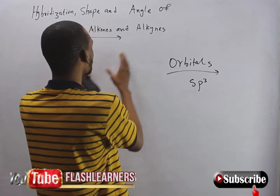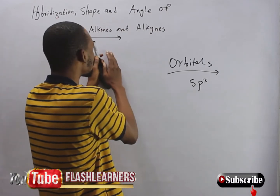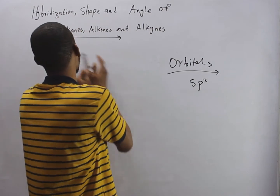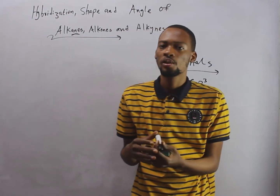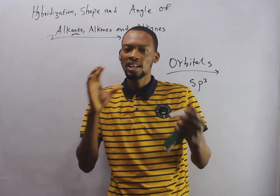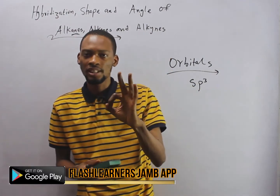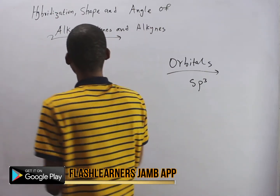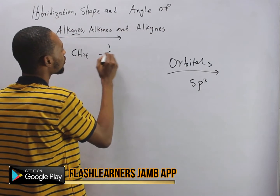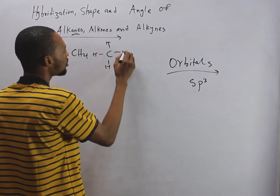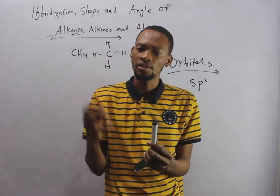We will be discussing hybridization, shape and bond angle under alkanes, alkenes and alkynes. Alkanes are hydrocarbons with single carbon-to-carbon bonds — they are saturated. The simplest alkane is methane, CH4: carbon with four hydrogens. Remember, carbon is tetravalent and can carry four electrons.